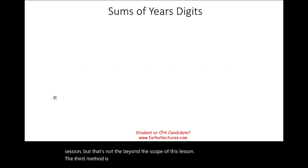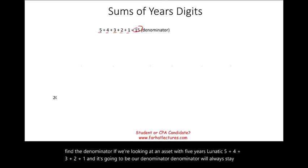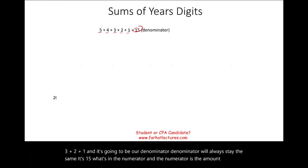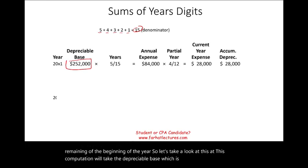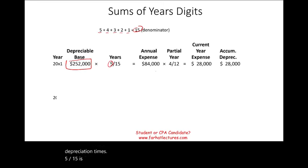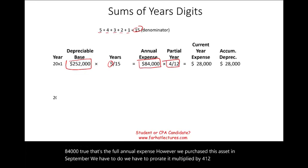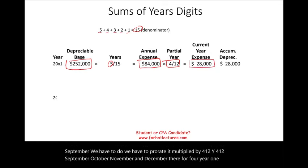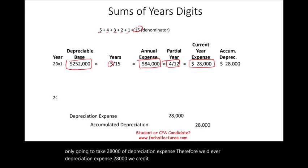The third method is the sum of years digits. First we find the denominator: for a five-year asset, we take 5 + 4 + 3 + 2 + 1. The denominator is always 15. In the numerator goes the remaining life as of the beginning of the year. We take the depreciable base of $252,000 times 5/15 — representing the remaining five years. The full annual expense is $84,000. However, since we purchased in September, we prorate it by 4/12. Therefore, for year one we only take $28,000 of depreciation expense. We debit depreciation expense $28,000, credit accumulated depreciation $28,000.